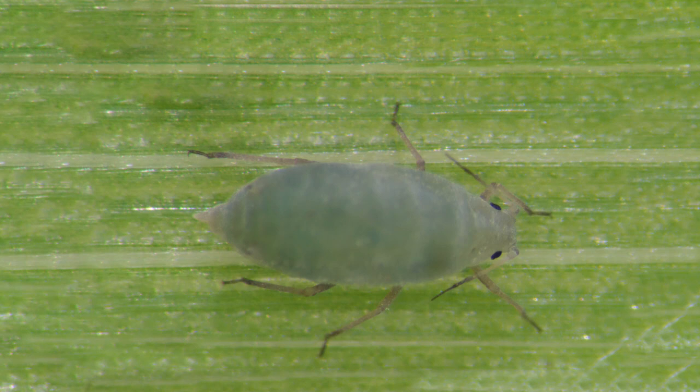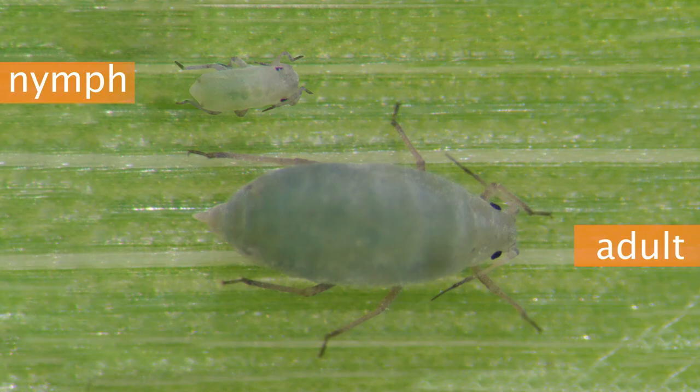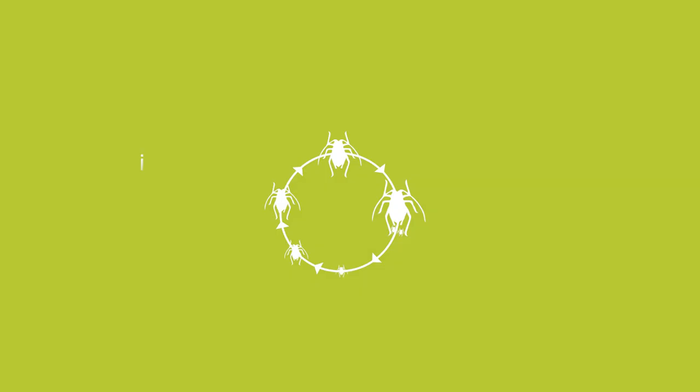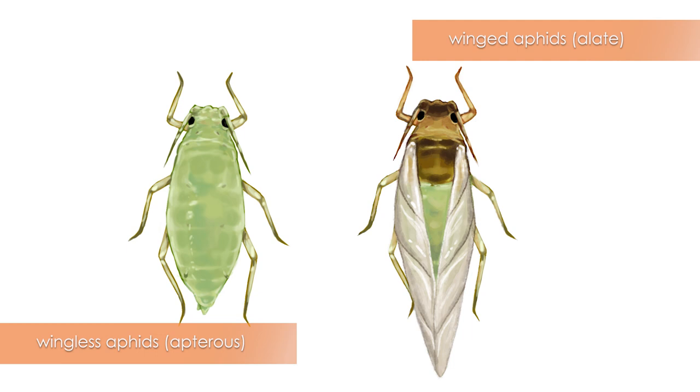In Australia, Russian wheat aphid reproduces asexually, with adults giving birth to live juveniles called nymphs. Nymphs pass through four to five instars before becoming adults. When they reach adulthood, Russian wheat aphid can be wingless or winged.